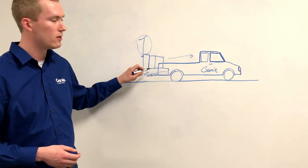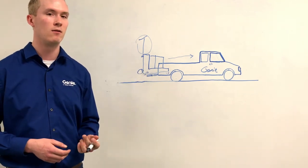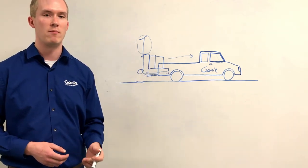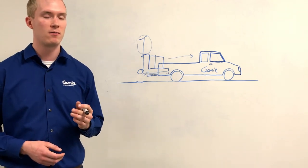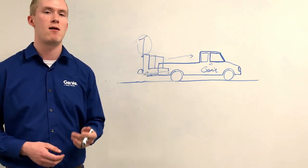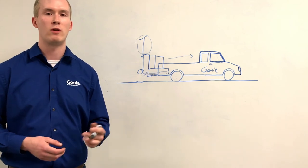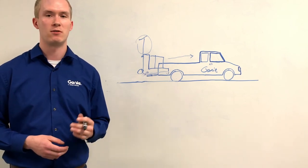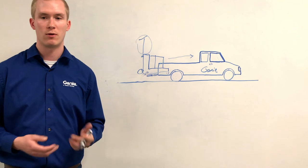Finally, we'll want to make sure that we use at least two chains to tie down the aerial work platform over the mast. You can look into the back of the operator's manual for instructions on where to place those tie-downs to make sure the aerial work platform is appropriately secured.